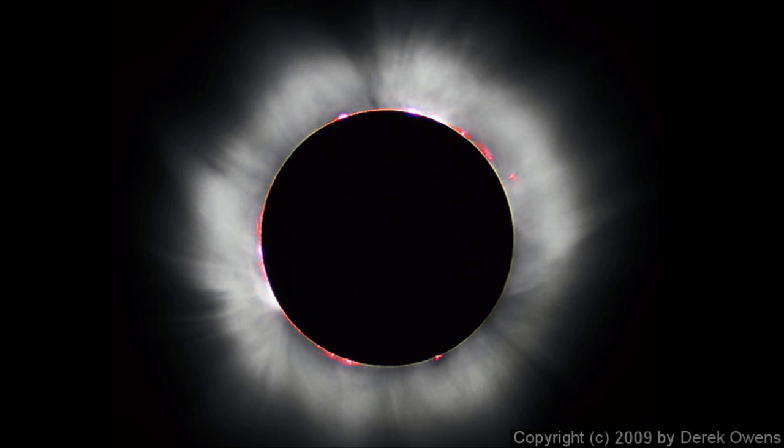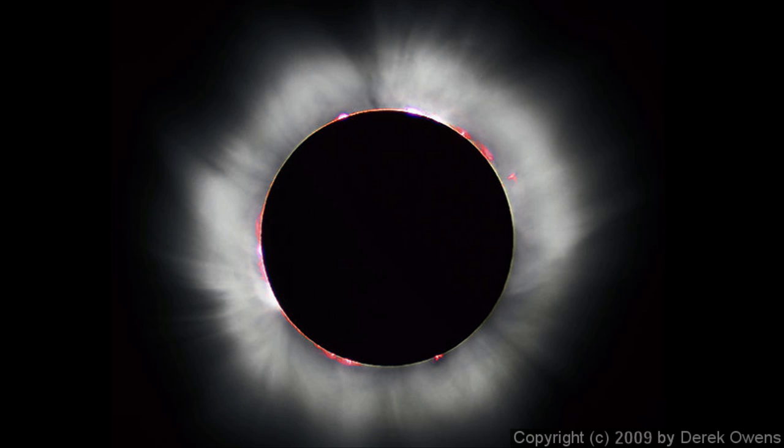If the photosphere, the main disk of the Sun, is blocked out you can see this thin layer of red around it. That's the chromosphere, and it's called the chromosphere because it's colored like that. The word chromo comes from the Greek word for color, and then sphere meaning around objects, so chromosphere means the colored part of the Sun.